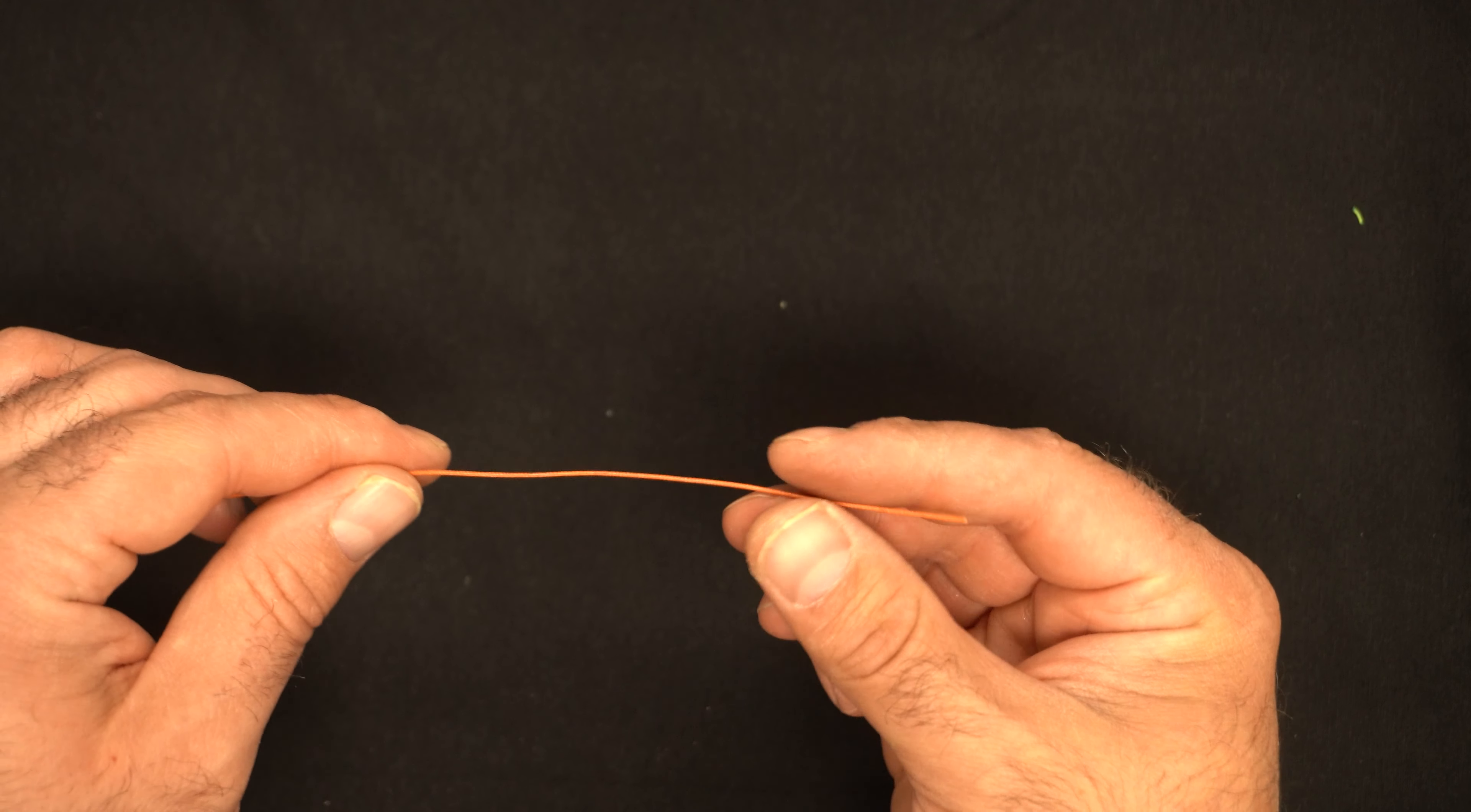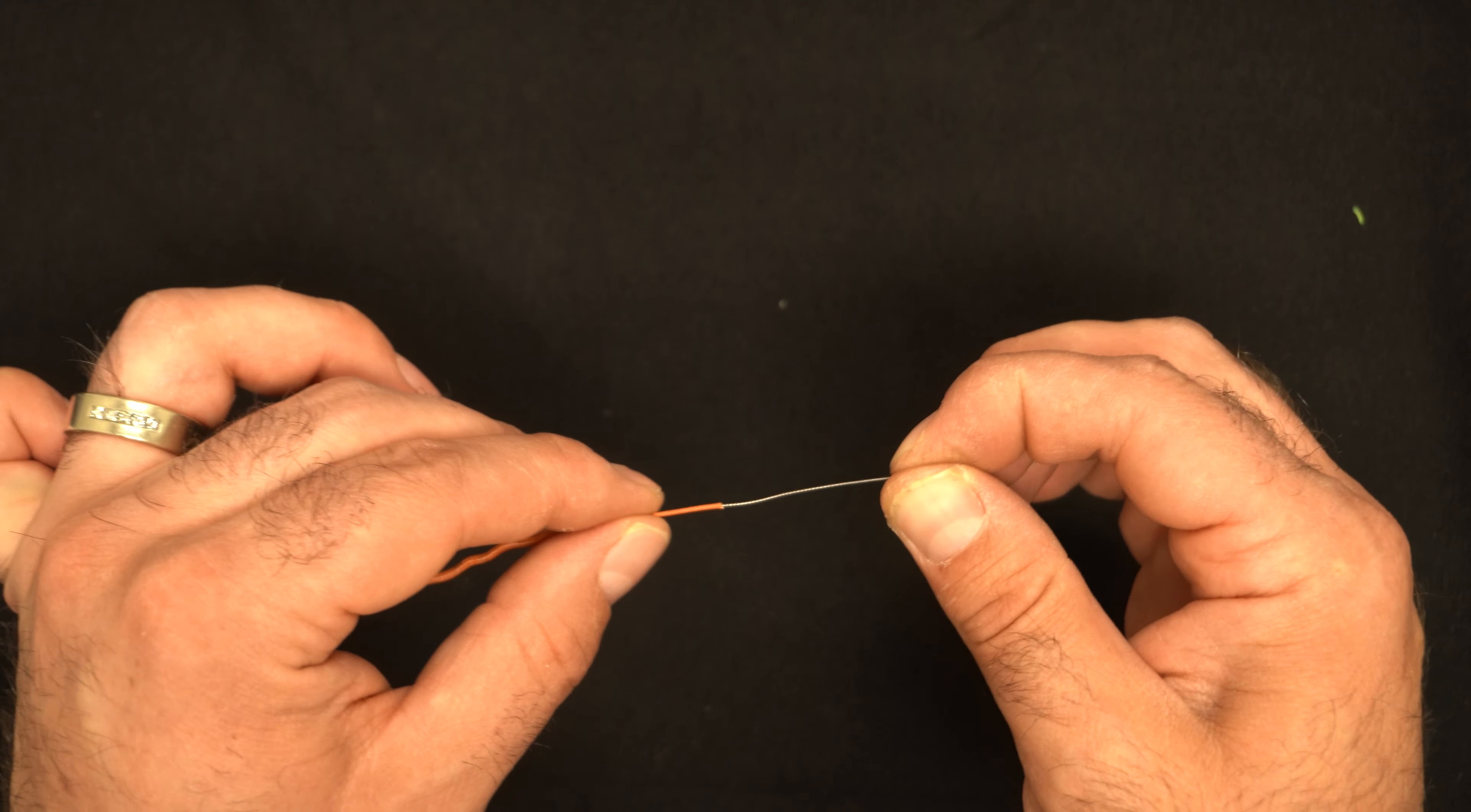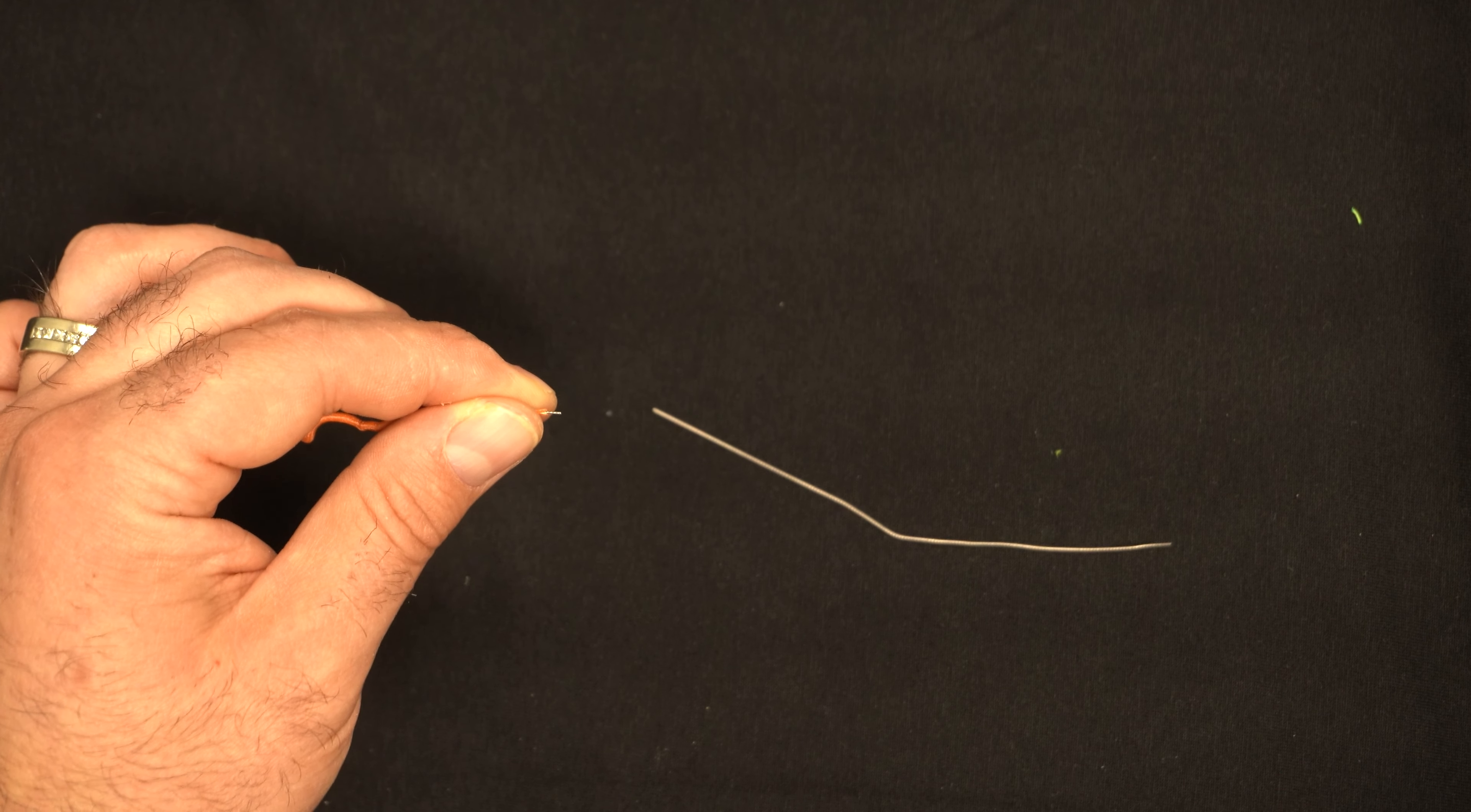So first we got our lead core here. We're going to start by slowly pulling back the shielding to expose some of the lead. We're going to take out about six inches of lead, and simply give that little snip.